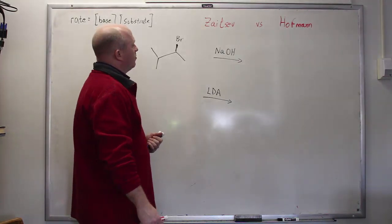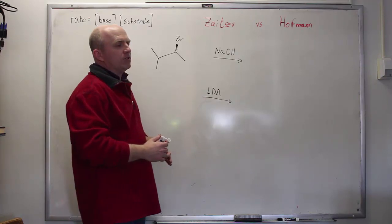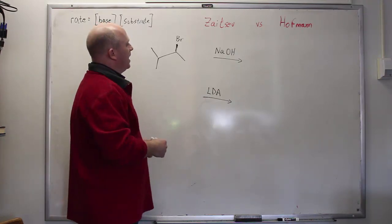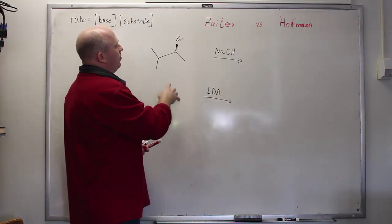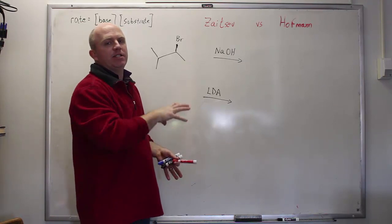One thing that makes elimination reactions much more complicated than substitution reactions is the fact that there are almost always multiple regioisomeric products possible, which is to say in a substitution reaction you know that you're either going to end up where the leaving group was or there's going to be some carbocation rearrangement.